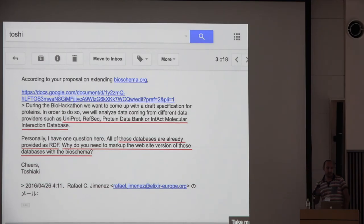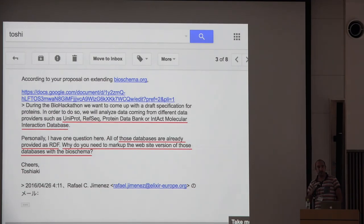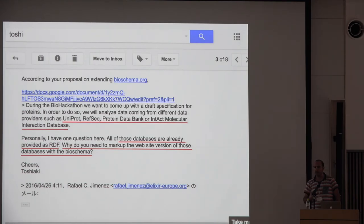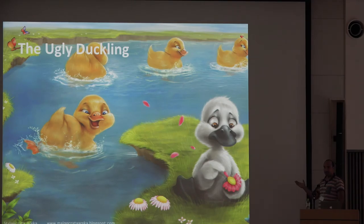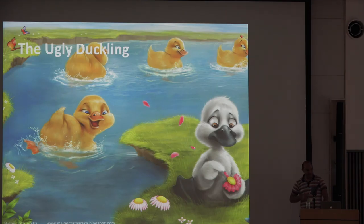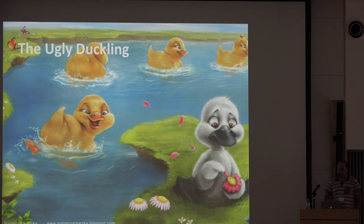Leila Garcia, an attendee from last year, was proposing to use schema.org to annotate protein resources like UniProt, Intact, or PDB. Toshi was asking the question people normally ask me: why use schema.org if these resources already provide RDF? I really believe in the consistency of schema.org with the traditional way to provide RDF, but I feel like the ugly duckling among the RDF ducks.